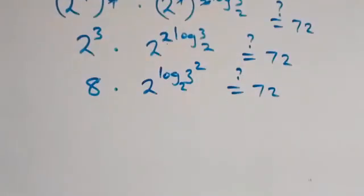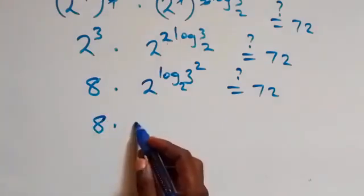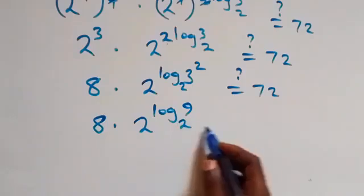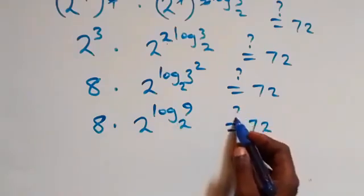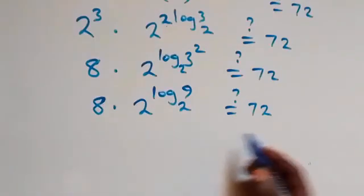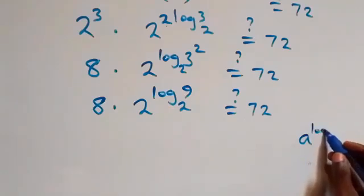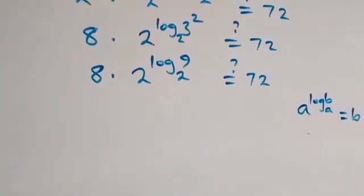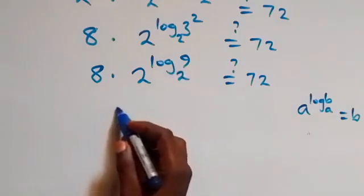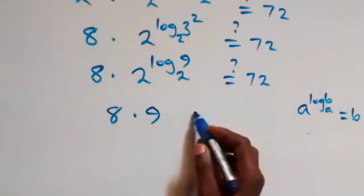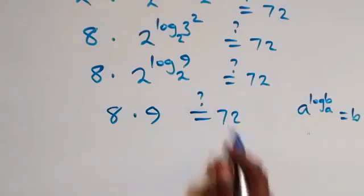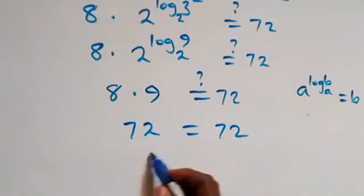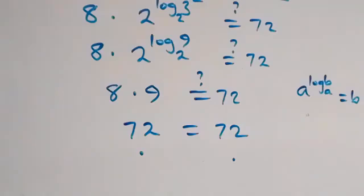Using the logarithm law a^(log_a b) = b, we have 2^(log₂9) = 9. So we get 8 times 9, which equals 72. The left-hand side equals the right-hand side — 72 = 72 — confirming our answer.